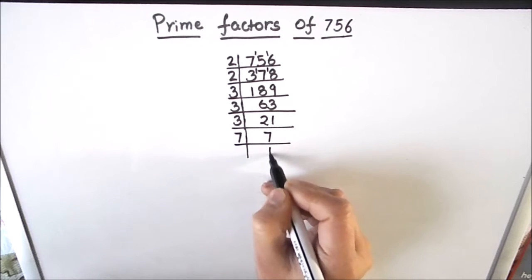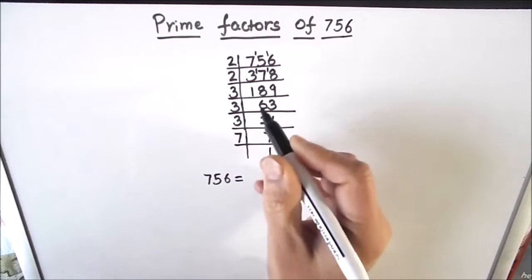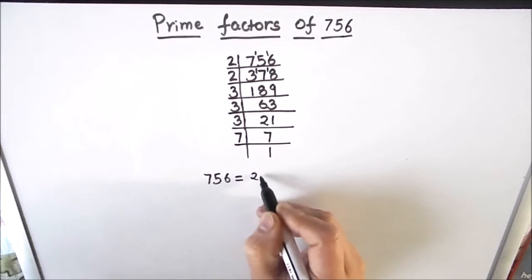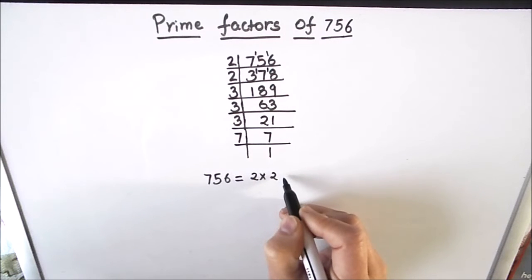So the prime factors of 756 are all the numbers which are on the left hand side of the ladder. So 756 can be written as a product of 2 times 2 times 2 times 3 times 3 times 3 times 7.